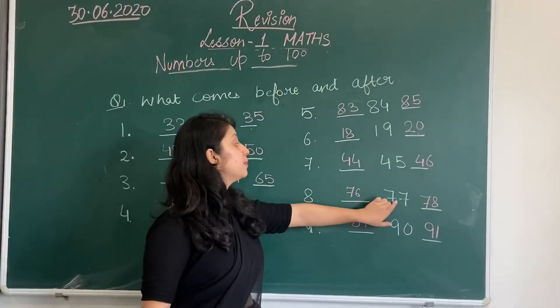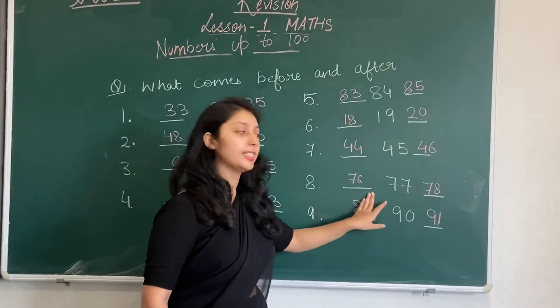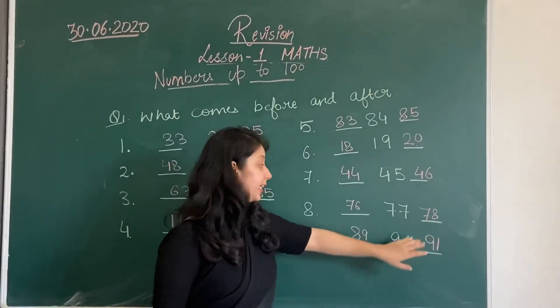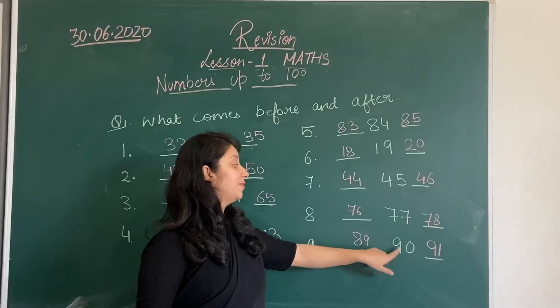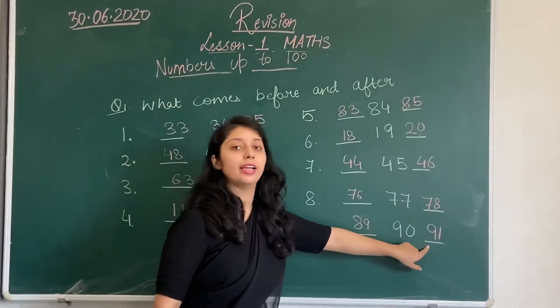Next question is what comes before and after 77. Before 77 comes 76, and after 77 comes 78. What comes before and after 90. Before 90 comes 89, and after 90 comes 91.